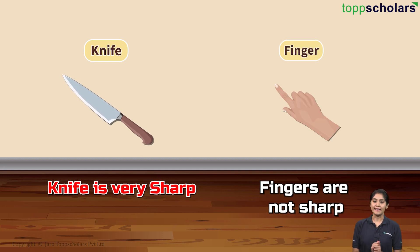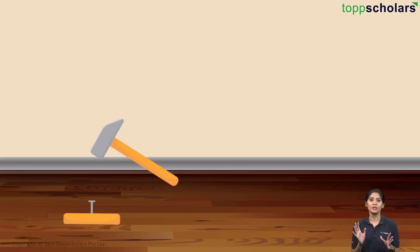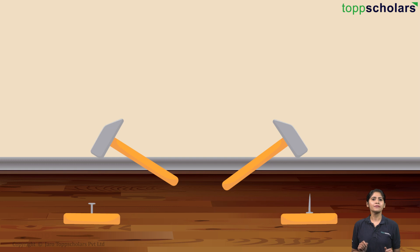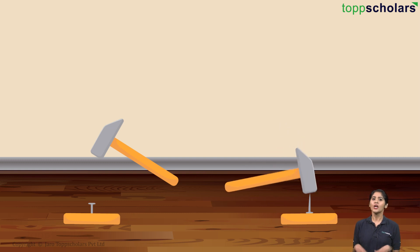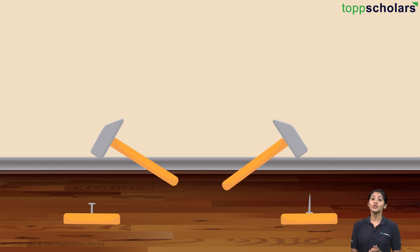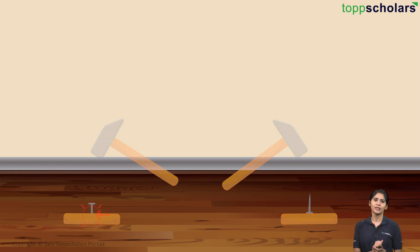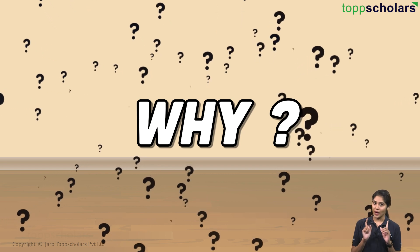Let's take another example. When you hammer onto a nail, it can drive into this wooden board. But what if you were to keep the nail the other way and put the same amount of force? Do you think it would be able to puncture through? No, it won't. But why? Well, you might say that you need to keep the pointed end over there. Again, the question remains — but why?